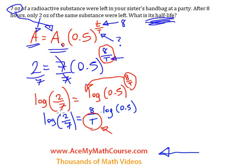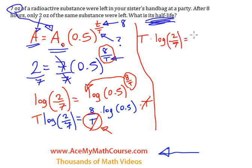And I want to isolate T, so I will need to multiply both sides of the equation by T. So that it disappears over here. So I have T times the log of 2 over 7 equals 8 log half. And I will rewrite this, because it's getting a bit too messy for my liking.